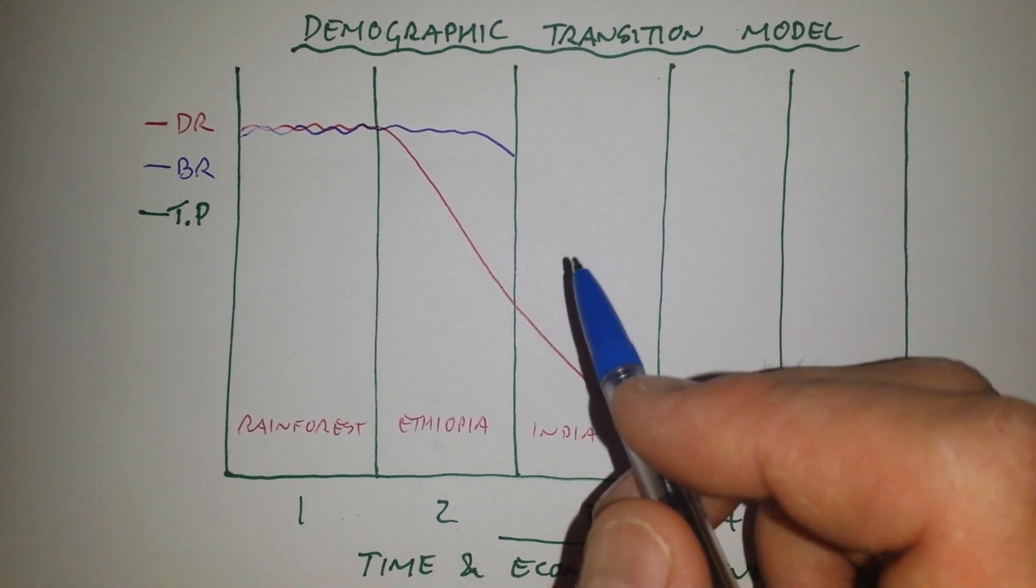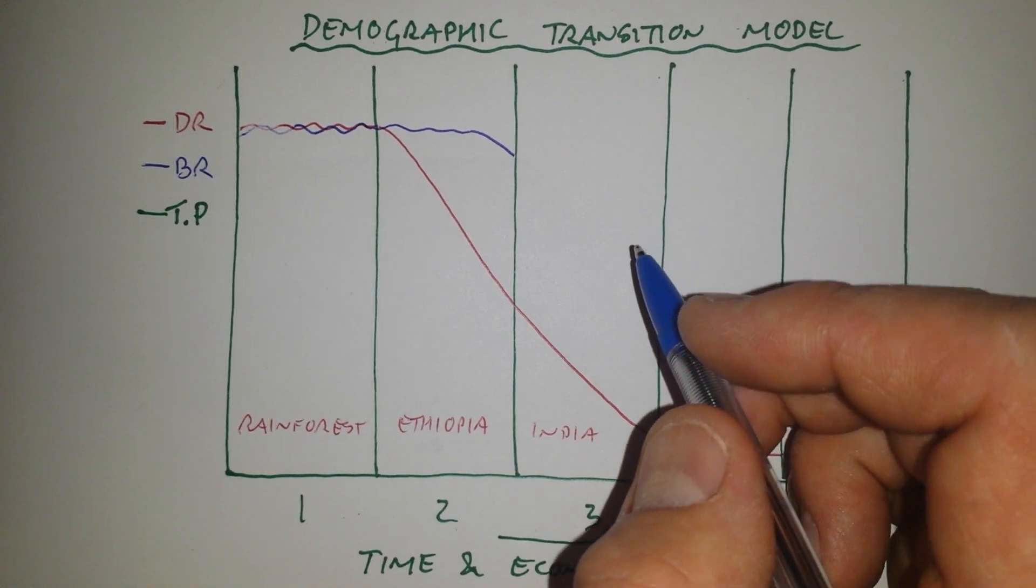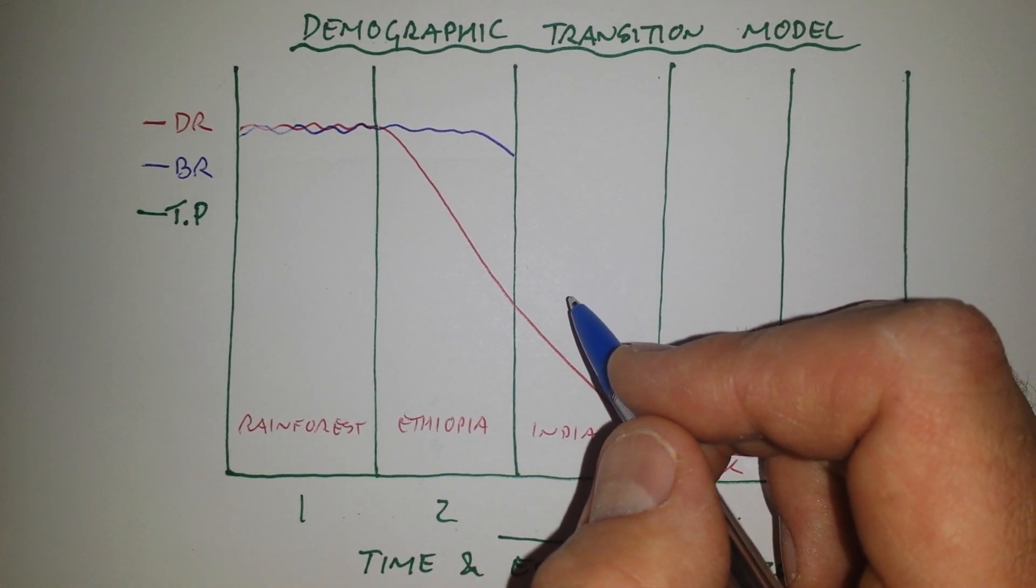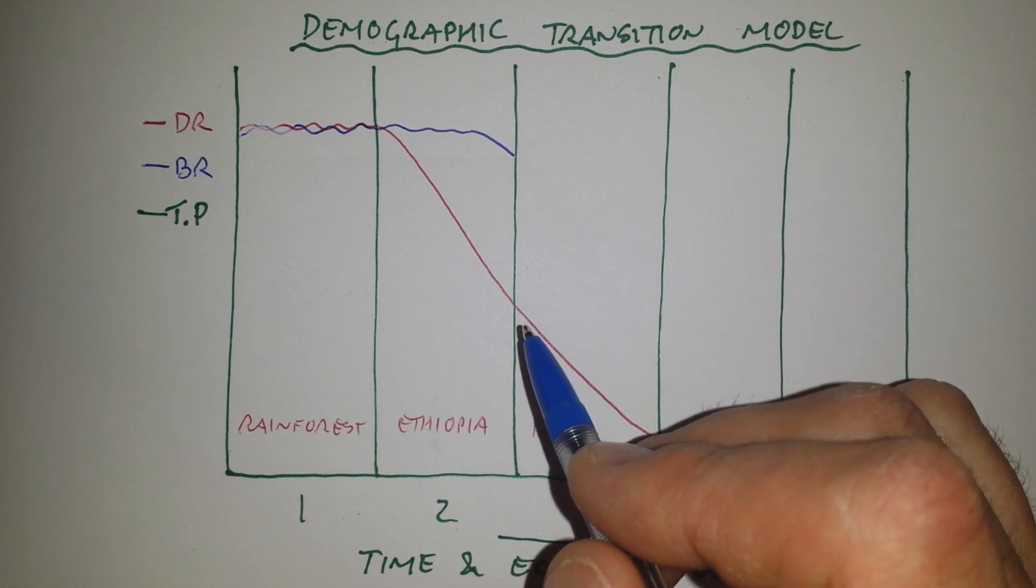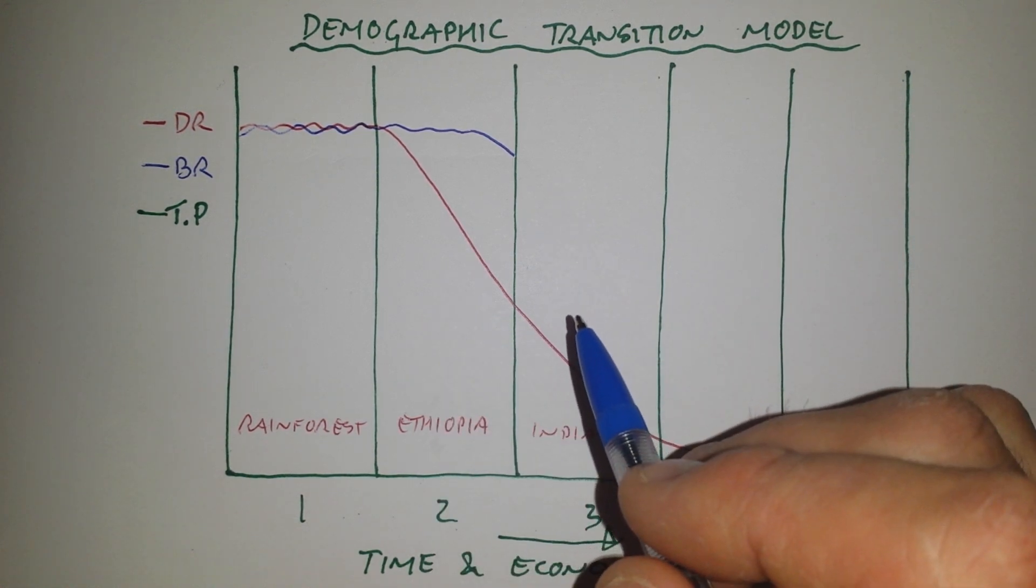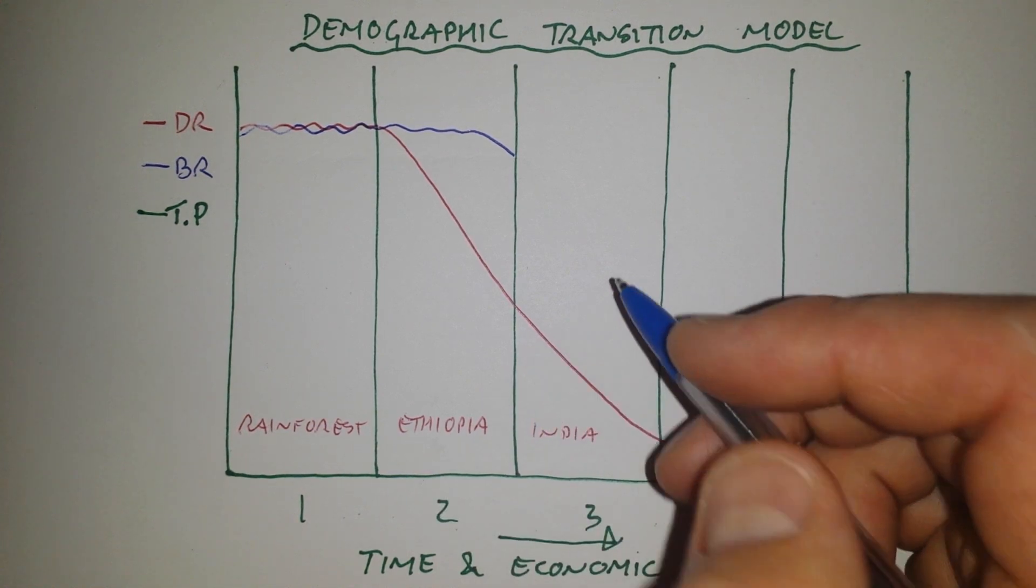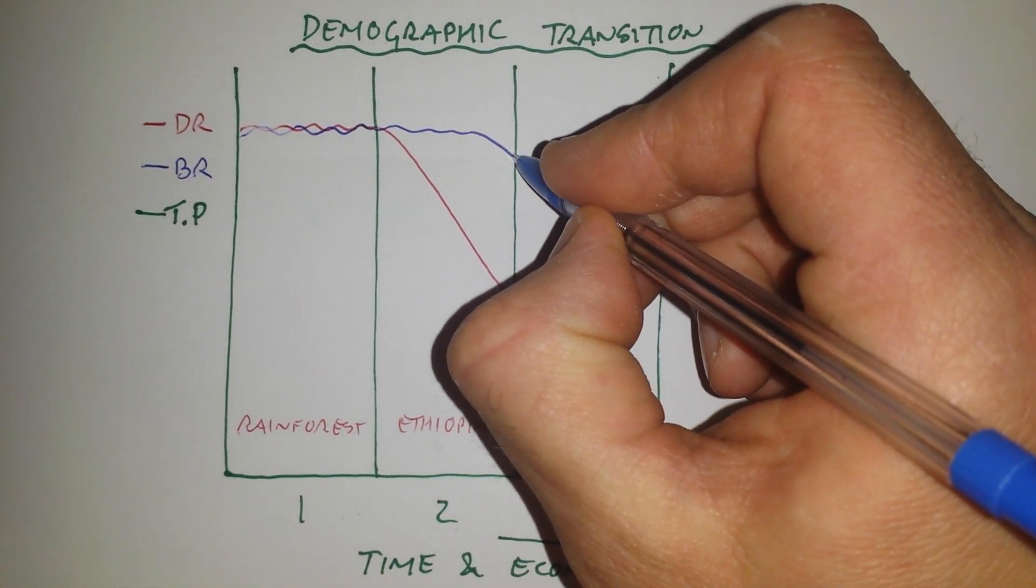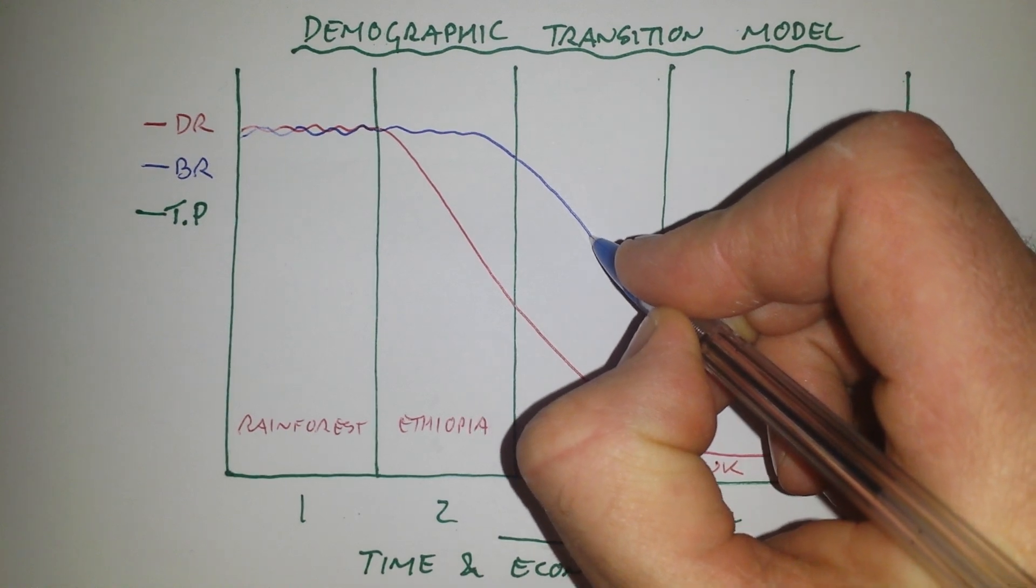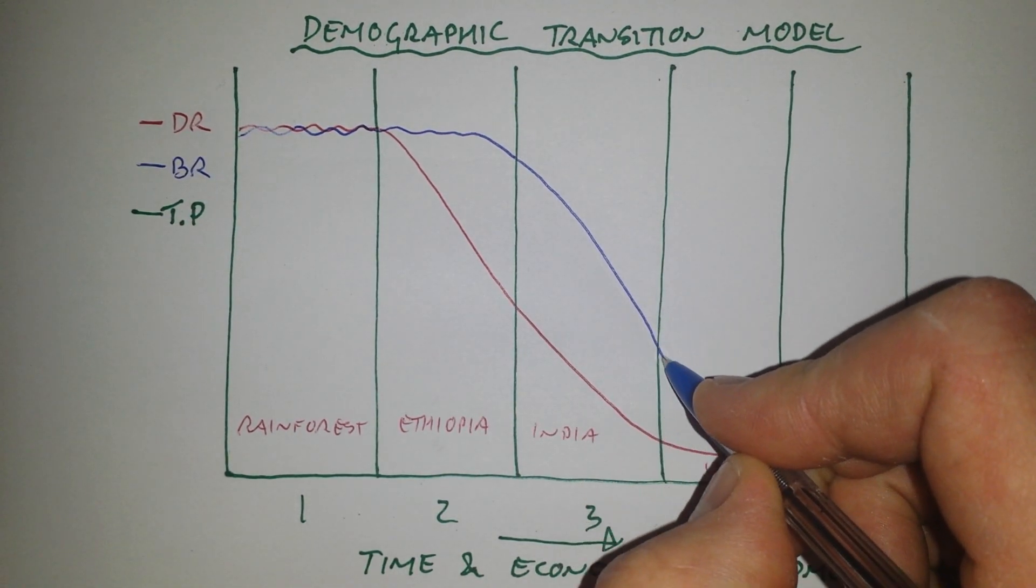However, by stage three, the country is really starting to develop now. They are getting access to family planning and contraception. People are starting to migrate from the countryside into cities. They're no longer all farming. People are working in factories, so they don't need to have as many children. And so as we move into stage three, the birth rate also starts to fall this time.